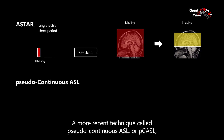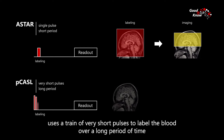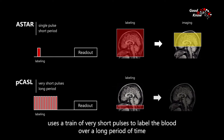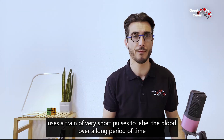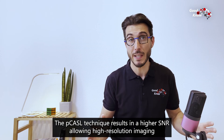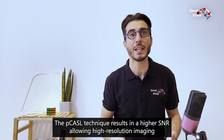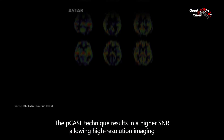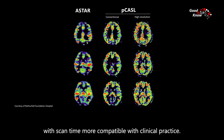A more recent technique, called pseudocontinuous ASL or PCASL, uses a train of very short pulses to label the blood over a long period of time. The PCASL technique results in a higher SNR, allowing high resolution imaging with scan time more compatible with clinical practice.